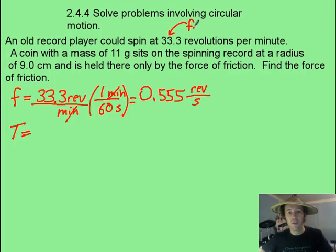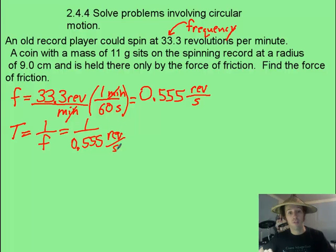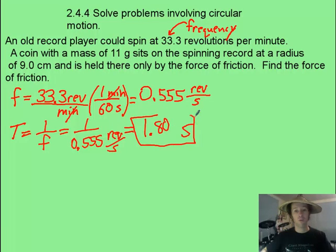First, realize they're giving you a frequency here. Frequency can be converted into period, or the time of one revolution. First, I don't like it in minutes, so I converted it to revolutions per second. Period equals one over frequency, so I'll do one divided by 0.555 revs per second, and that turns it into seconds. Revolutions really isn't a unit, so I end up with 1.80 seconds for every revolution.